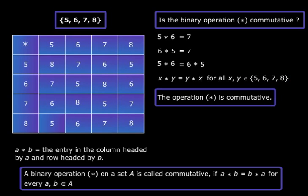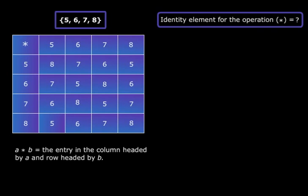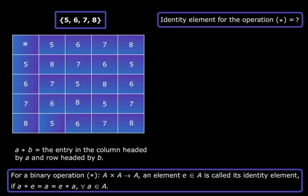Alright, let me now ask you another question. Does there exist any identity element for the operation star? Let's find out the answer to this question. Now we know that for a binary operation star that is defined from A cross A to A, an element e that belongs to set A, if it exists, is called its identity element if A star e equals A equals e star A for all a that belong to set A.